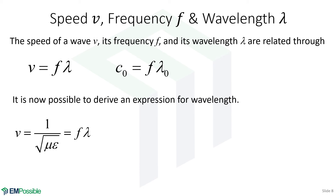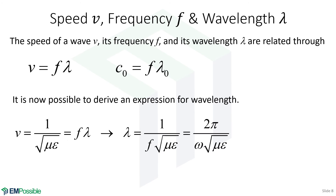From there, it's possible to derive an expression for wavelength. V is 1 over the square root of mu epsilon, but it's also equal to F lambda. From that we can find an equation for wavelength — this is not the free-space wavelength, this is the wavelength that changes depending on the medium. We can express it in terms of ordinary frequency F or angular frequency omega. The ordinary frequency is cycles per second, measured in kilohertz, megahertz, gigahertz, terahertz. The angular frequency omega is radians per second.